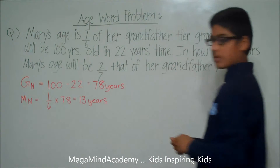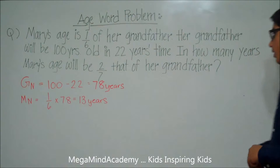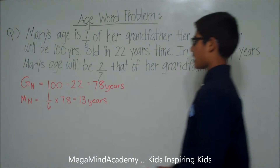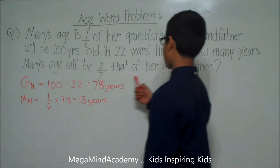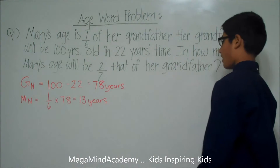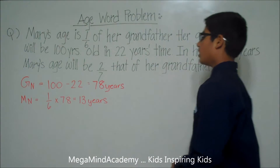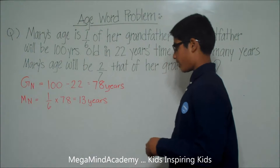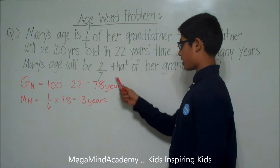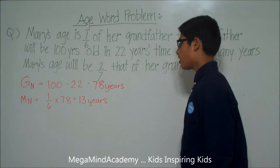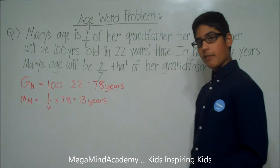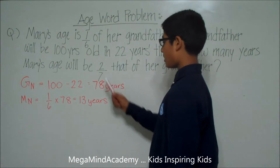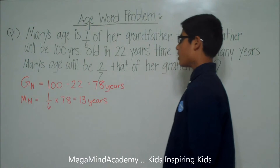The problem is asking: in how many years will Mary's age be two-sevenths that of her grandfather's? We can see a fraction here — two-sevenths. We know that the denominator is the whole, so seven is the whole.